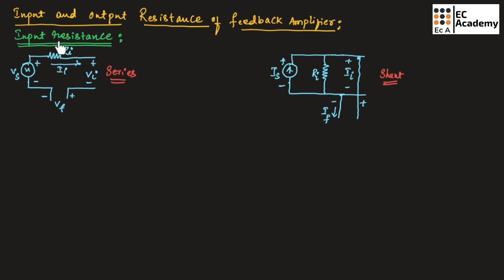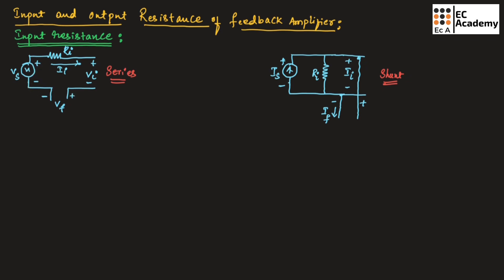First, let us find the input resistance. For a feedback amplifier, at the input side, there are two types of connection: the first type is series connection and the second type is shunt connection. Let us derive the expression for input resistance for the series type of connection. This is the series connection across the input of a feedback amplifier.